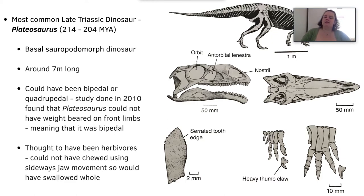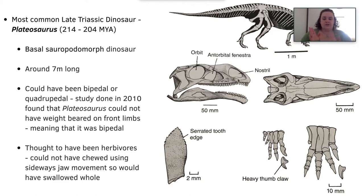Plateosaurus was originally thought to have been either bipedal or quadrupedal. However, a study in 2010 found it could not have borne its weight on its front legs, confirming it was bipedal. It's thought they were herbivores because their teeth have quite herbivorous characteristics. They couldn't chew sideways like a cow does, so they would have just had to swallow food whole.